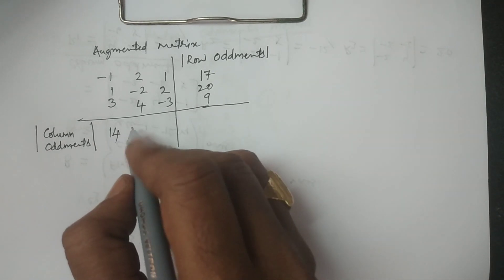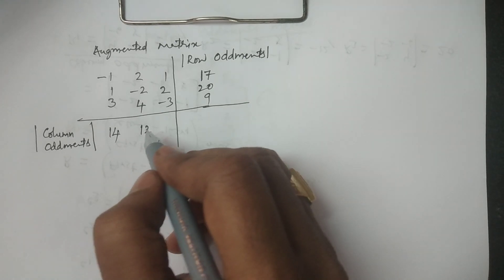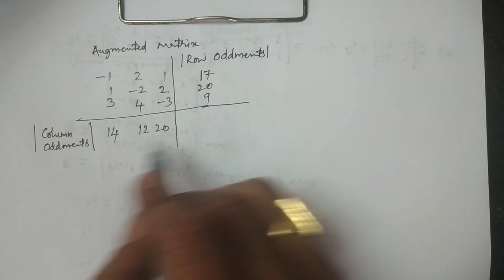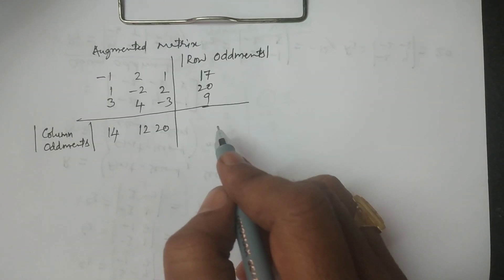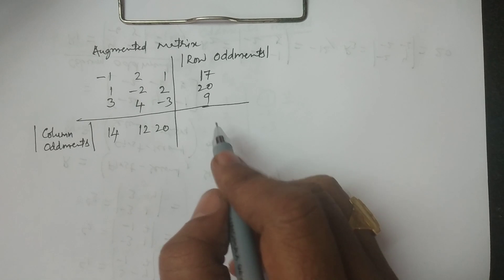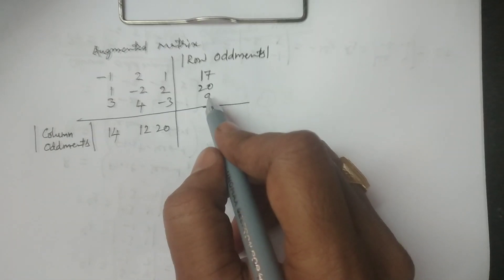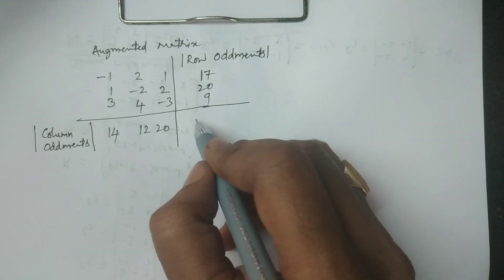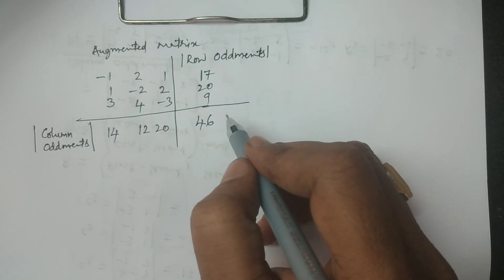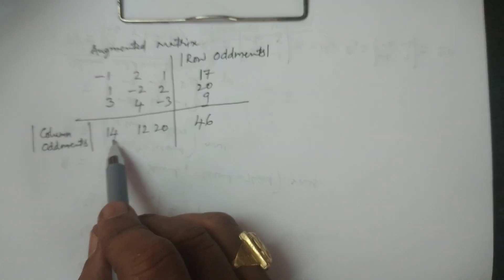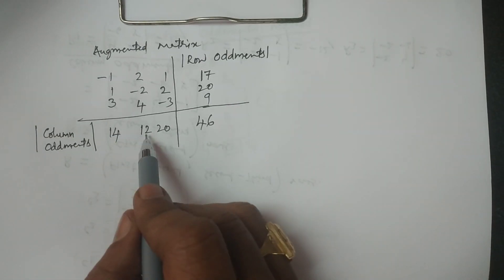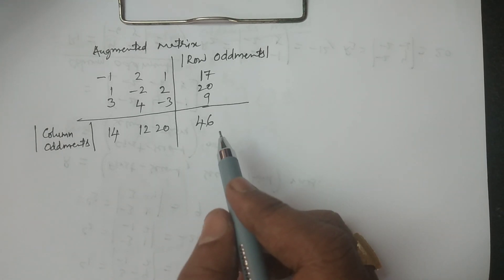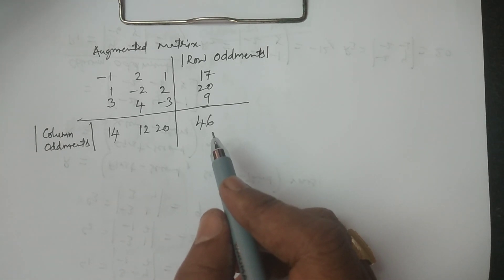Row oddments modulus values are 17, 20, 9. Column oddments modulus values are 14, 12, 20. The sum of row oddments is 17 plus 20 plus 9 equals 46. The sum of column oddments is 14 plus 12 plus 20 equals 46. Both sums are equal, so we can continue.